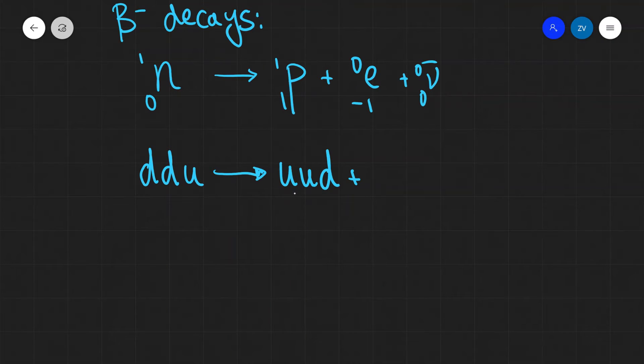And we also, of course, get the electron minus one zero and our neutrino, which is zero zero.